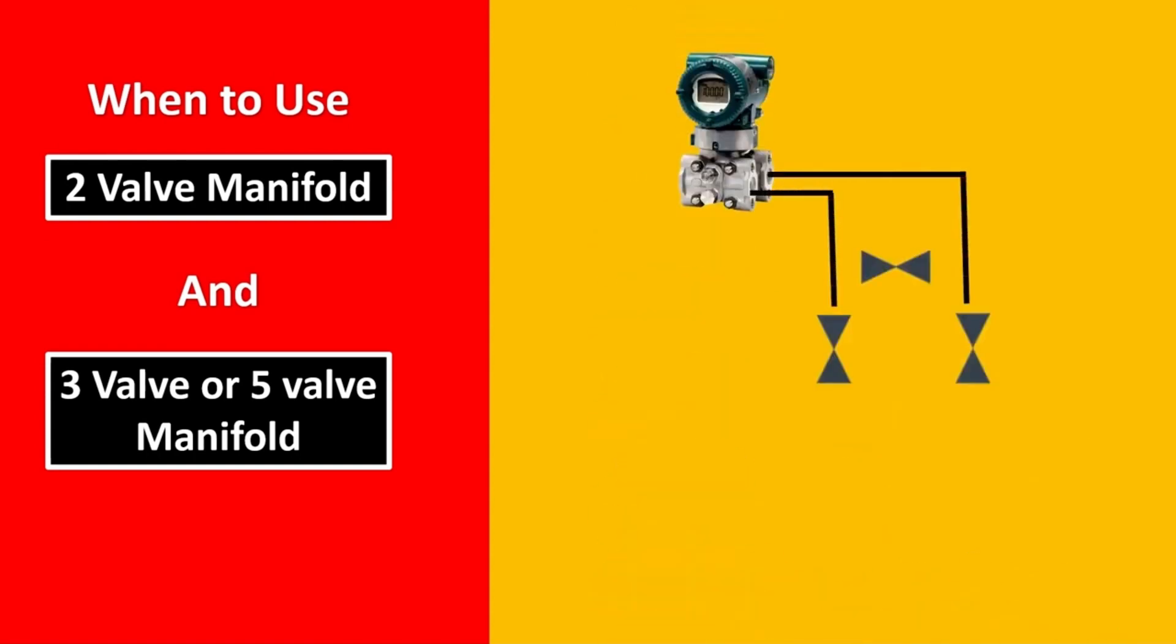Second is when you have 3 valve manifold. 3 valve manifold here is used for DP transmitters. You will have these 2 tappings or these 2 valves open and this one is closed.